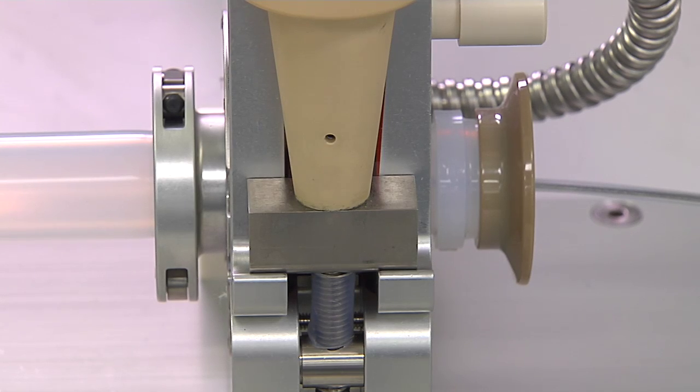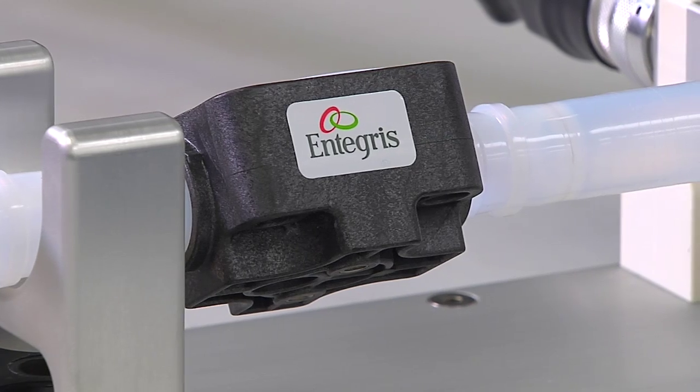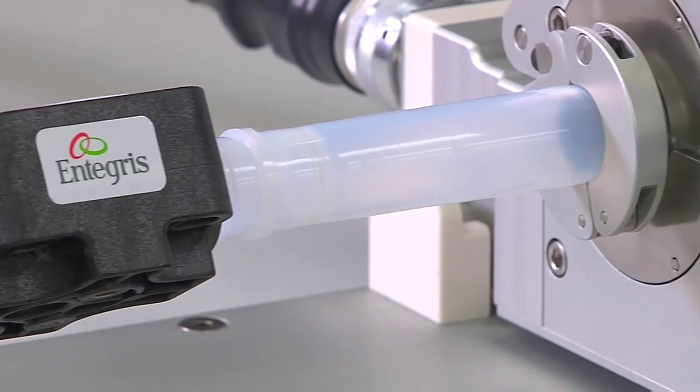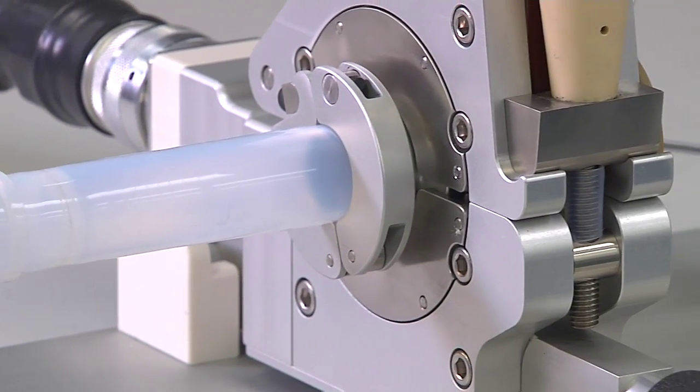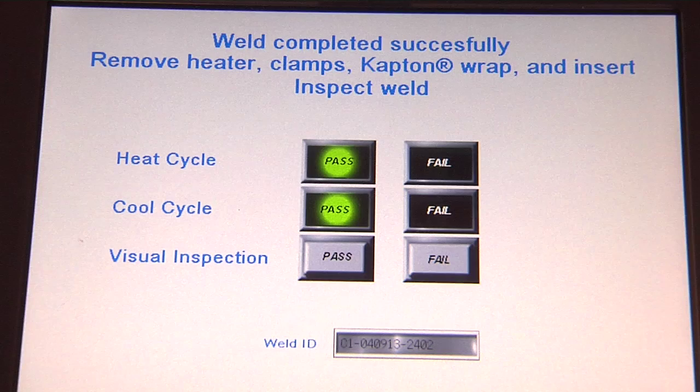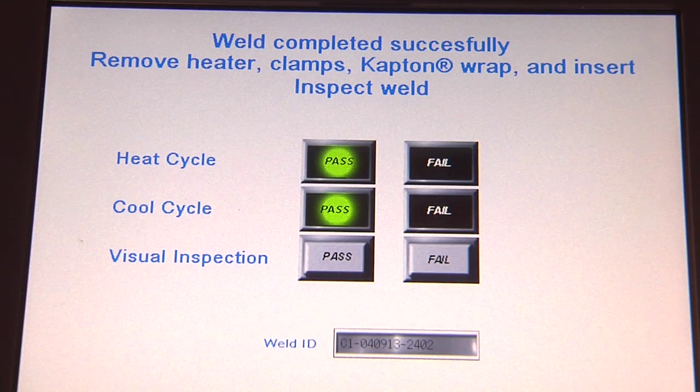Should the process deviate from the required parameters for any reason, the control module will automatically terminate the weld process and alert the operator of an abnormal situation. After the welding procedure, the controller will automatically provide a pass or fail disposition based on successfully completing the heating and cooling process.